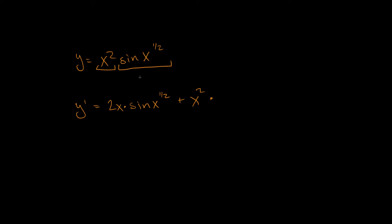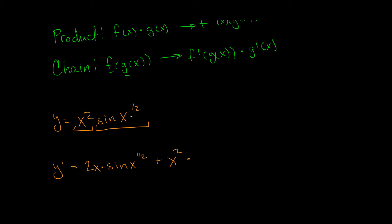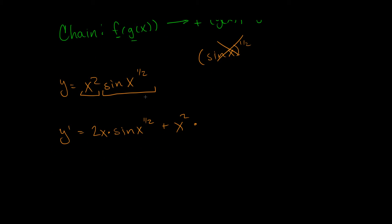What's the derivative of sine of x to the one-half? This is a function of a function — we're taking the sine of x to the one-half. The outside function is sine, because if the outside function were the one-half power, it would be written as sine of x, all to the one-half. Since it's not written that way, sine is the outside function. So we take the derivative of sine first and leave x to the one-half the same.